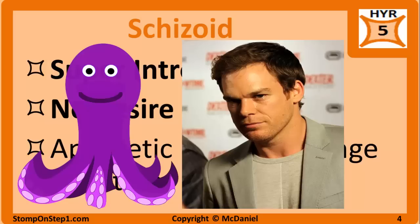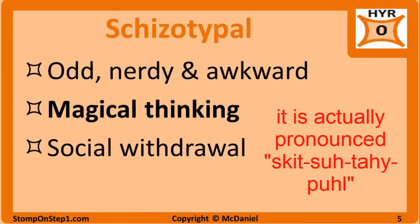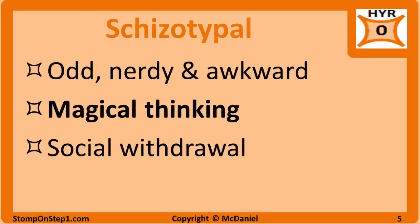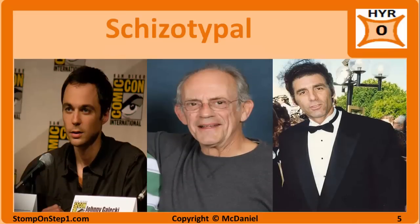People with Schizotypal Personality Disorder are extremely nerdy and awkward. Magical thinking such as paranormal or superstitious beliefs is common. They often have odd speech, dress, and mannerisms, and usually have voluntary social withdrawal similar to people with Schizoid. So you can think of Schizotypal as Schizoid plus magical thinking and odd behavior. Good examples are Kramer from Seinfeld, Doc Brown from Back to the Future, and the characters on The Big Bang Theory.